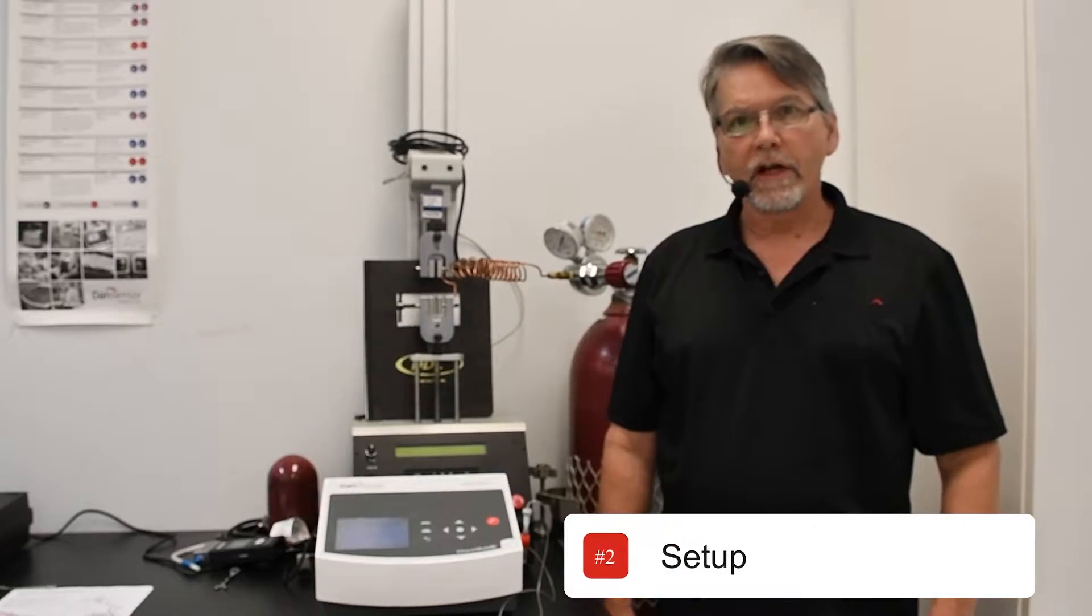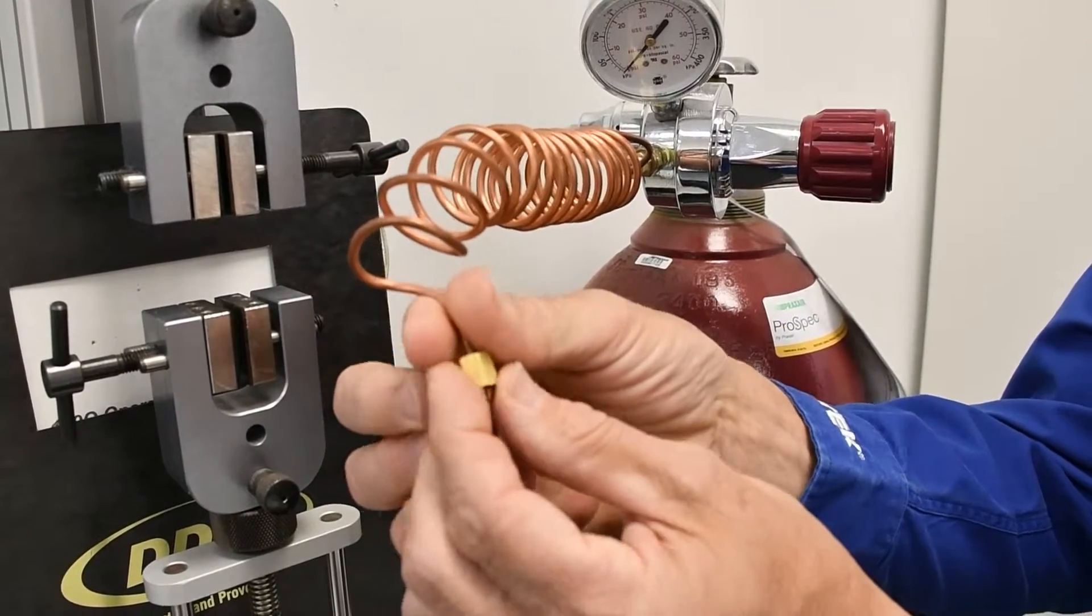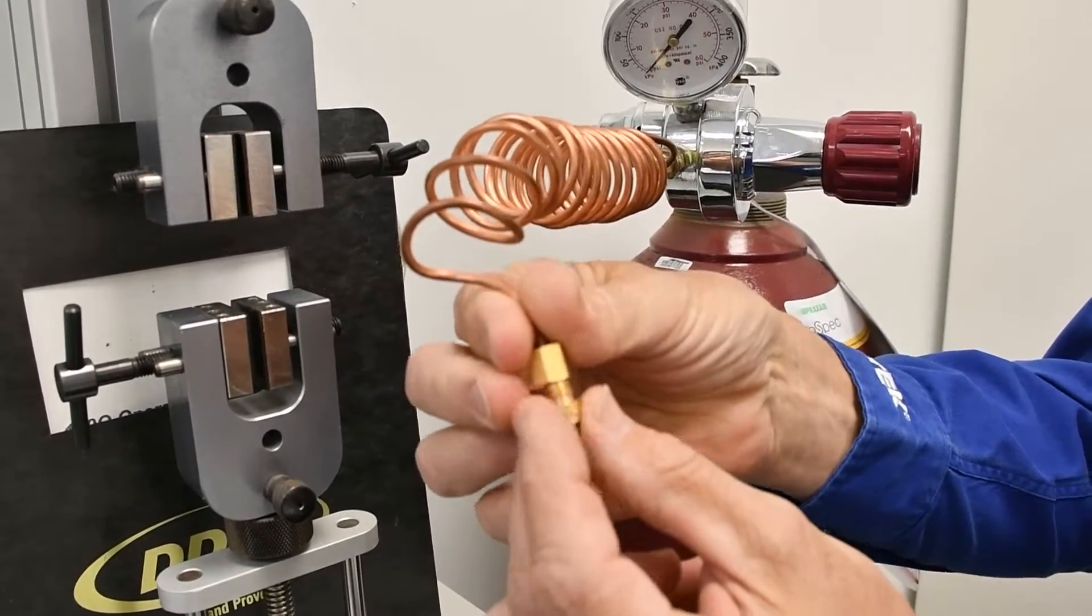Here's the setup for the Checkmate 3. Connect the gas tank regulator to the pressure relief kit via nut, ferrule, and copper tubing.